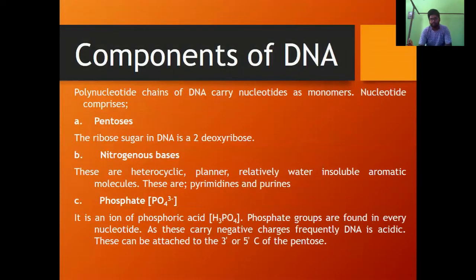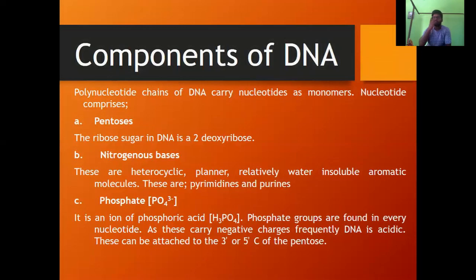If we see the components of DNA: a polynucleotide chain of DNA carries nucleotides as monomers. Monomers combine to produce a polymer. Nucleotides behave as monomers and are arranged in a chain to create a polynucleotide. Such a nucleotide comprises a pentose sugar, a nitrogenous base, and phosphate.